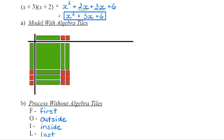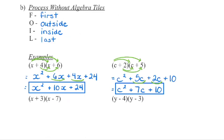We can go ahead and combine any like terms that we may have. Let's try a few examples. We have two binomials multiplied together, so we multiply the first terms: x times x gives us x squared. Then the outside: x times 6 gives us 6x. The inside: 4 times x gives us 4x. And the last term: 4 times 6 gives us 24. Check for like terms — 6x plus 4x is 10x. So we have x squared plus 10x plus 24.